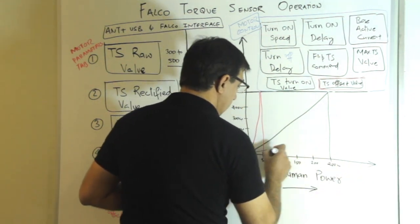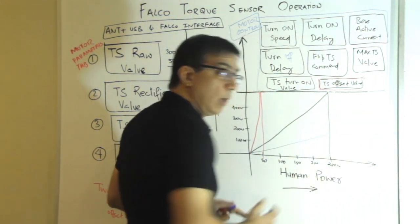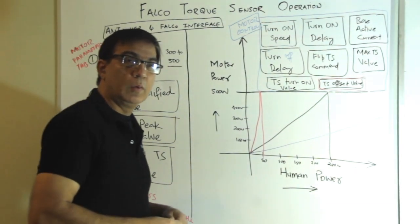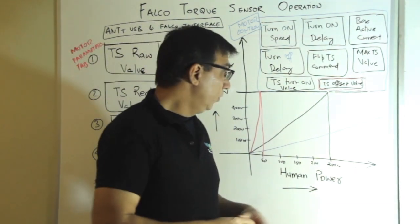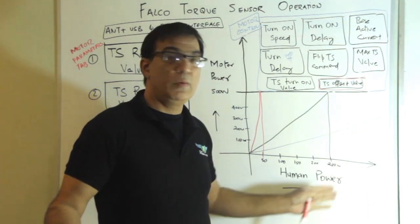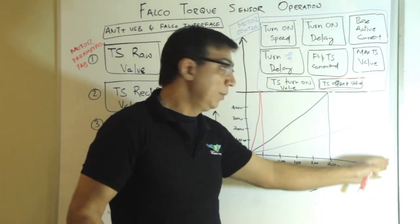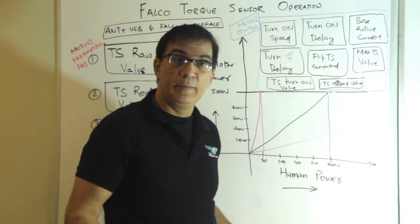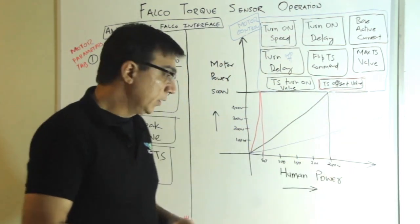So you could essentially control these with a very wide range. For example, if you are a top athlete, then you say, I can produce 2,000 watt of power. So I want my 2,000 watt of power to be matched with 500 watt of human power. That's how the torque sensor works.